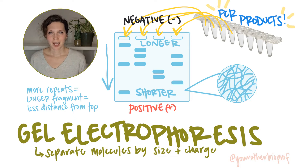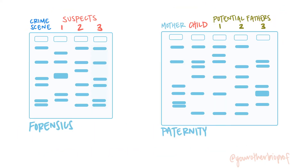Let's work some problems. I'm going to disappear for a little bit so we can make the images bigger, but I'll be back at the end. The most common kinds of exam questions with this material tend to fall in two categories: forensics analysis and paternity testing. You actually tackle these problems in slightly different ways, so we're going to work one of each. If you want to try them on your own first, go ahead and pause the video now.